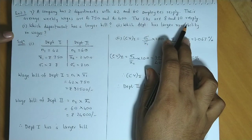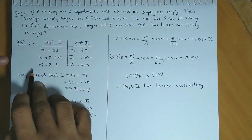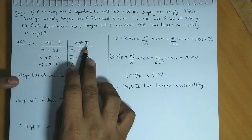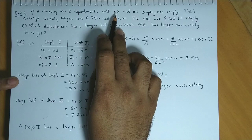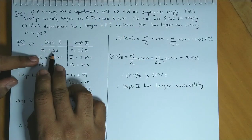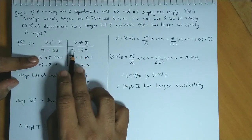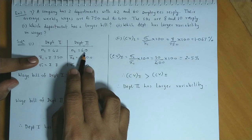First, we'll tabulate the information for Department 1 and Department 2. In the first department there are 42 employees, so n1 is 42. In the second there are 60, so n2 equals 60.